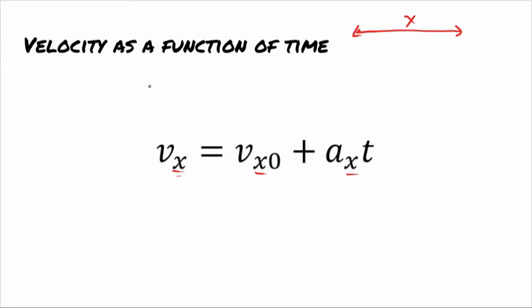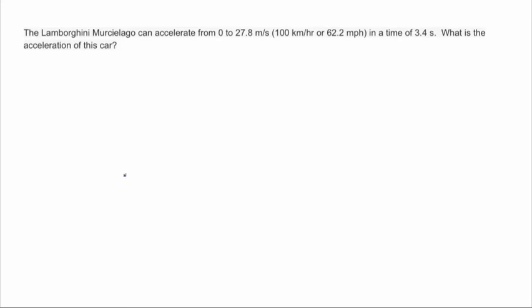What this equation really looks like is final equals initial plus acceleration times the time interval. So let's solve a problem with it. Here's an example problem. You have something that's accelerating from rest to 27.8 in a time of 3.4 seconds. What's the acceleration?